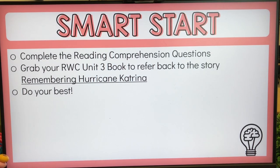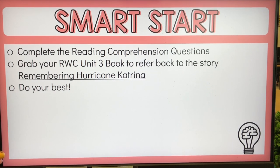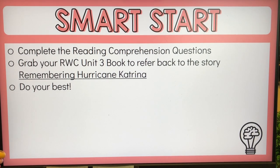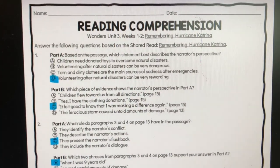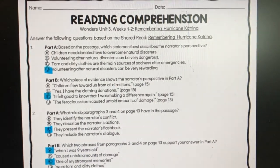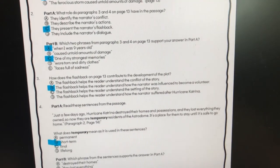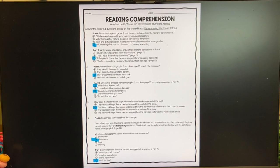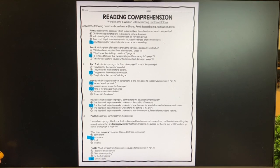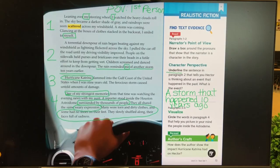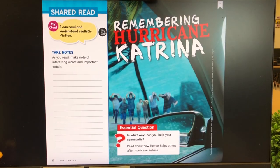For Monday, we started with our Smart Start where the students needed to complete some reading comprehension questions related to our RDVC story, Remembering Hurricane Katrina. These are the questions right here. We went over the answers after I collected all the students' work. I will be scoring this quiz, and we reviewed the answers. As we reviewed, we also looked back into the text, referring back to show them where the answers were.